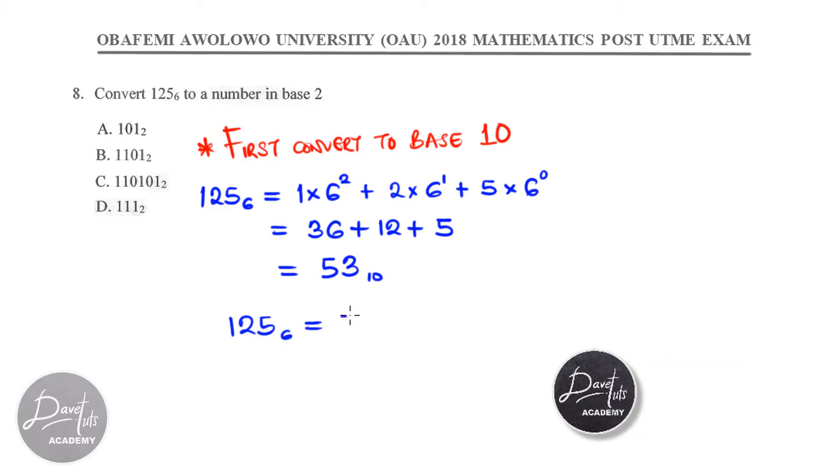So, 125 base 6 is actually 53 in base 10. Now, we have 53 in base 10 that we want to convert to base 2. We are going to achieve this by doing a division by 2 and noting all the remaining values when we are dividing 53 by 2. And then, all those remainders are going to constitute what will yield the number in base 2 for us.